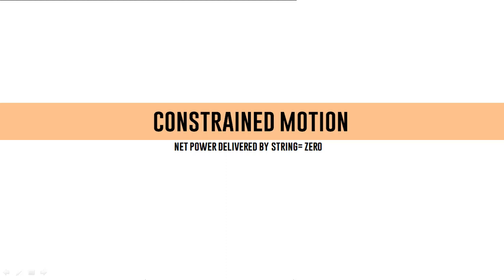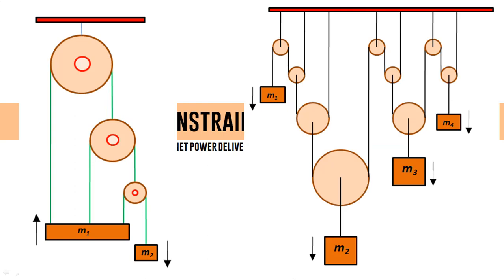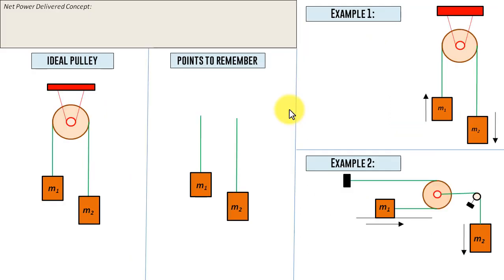So what's the big deal? If I show you this arrangement of masses, strings, and pulleys and tell you to find the velocity relationship between the blocks, from the outset it may appear very tedious, but trust me it's very easy. This is what I refer to as the net power delivered equals zero technique.